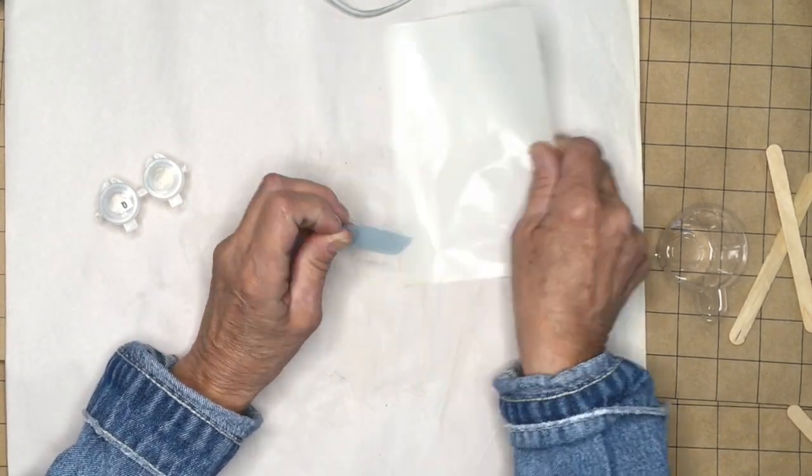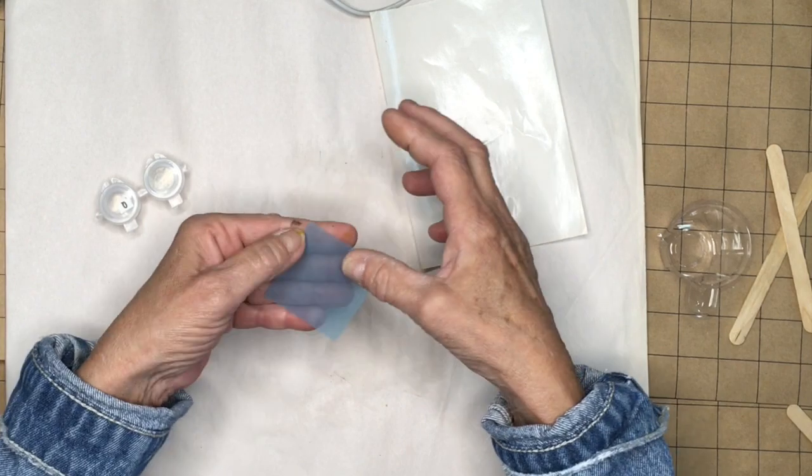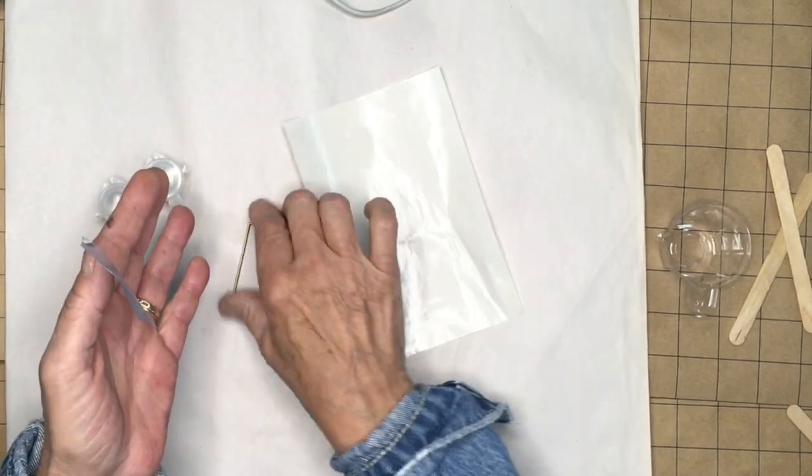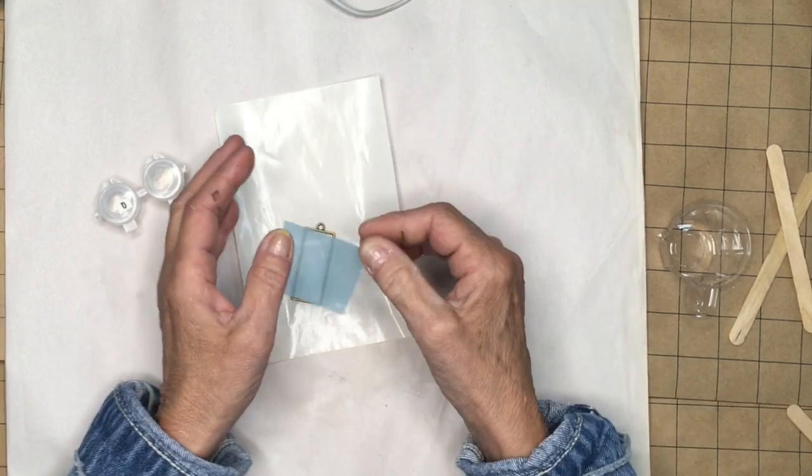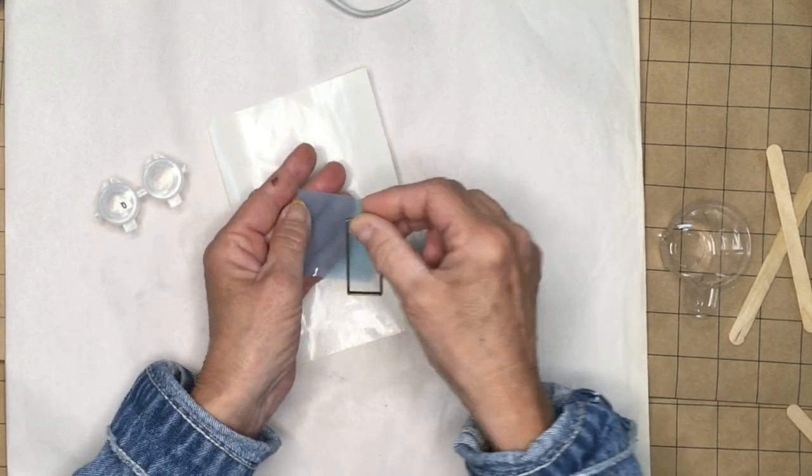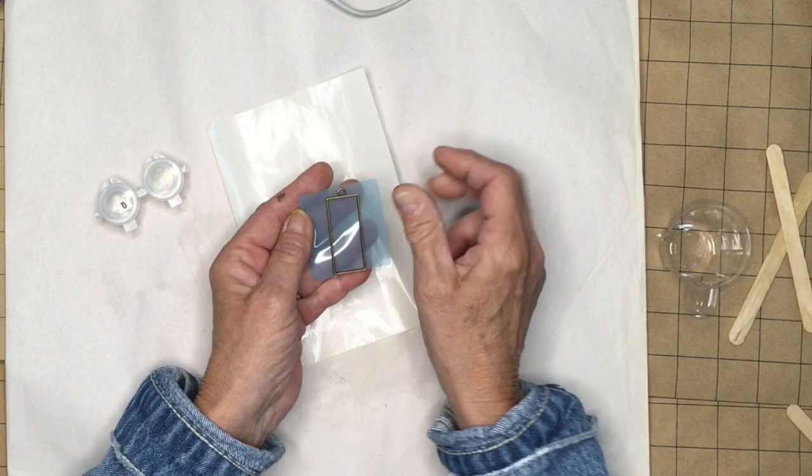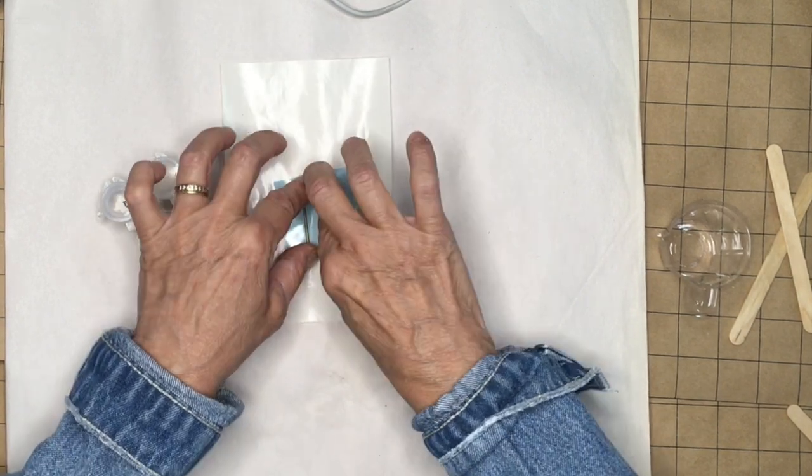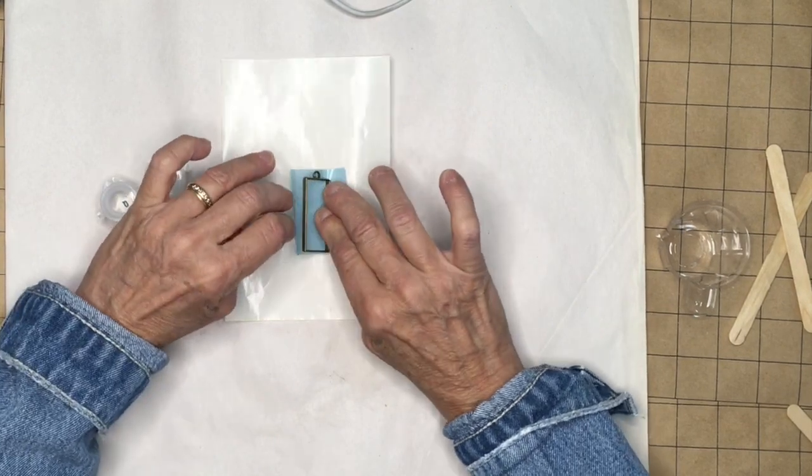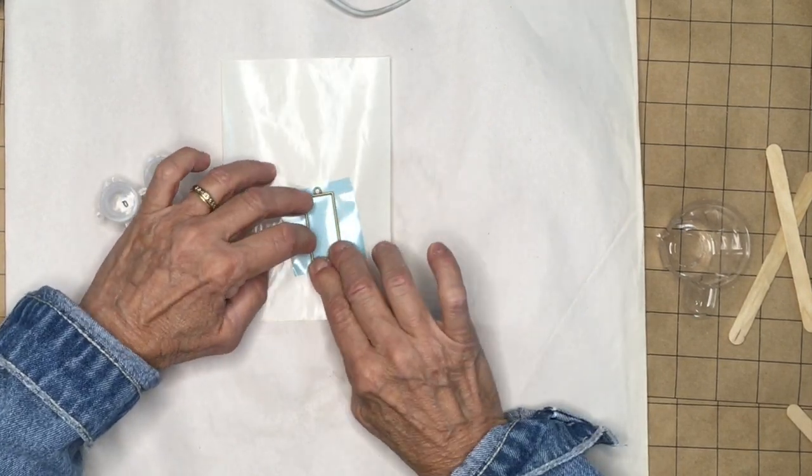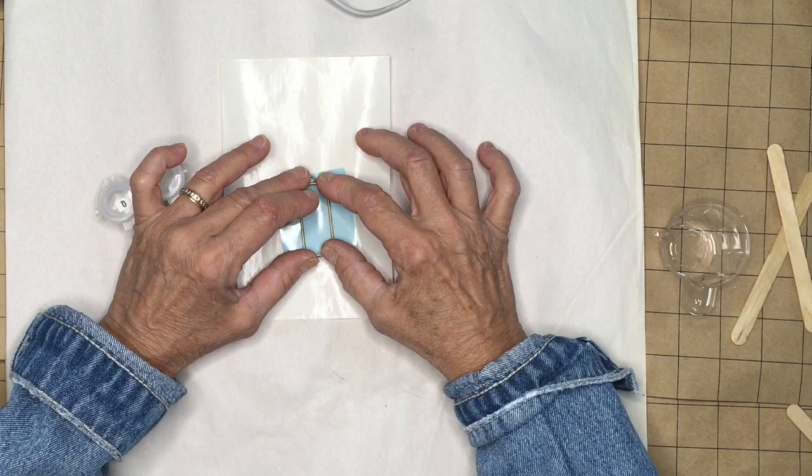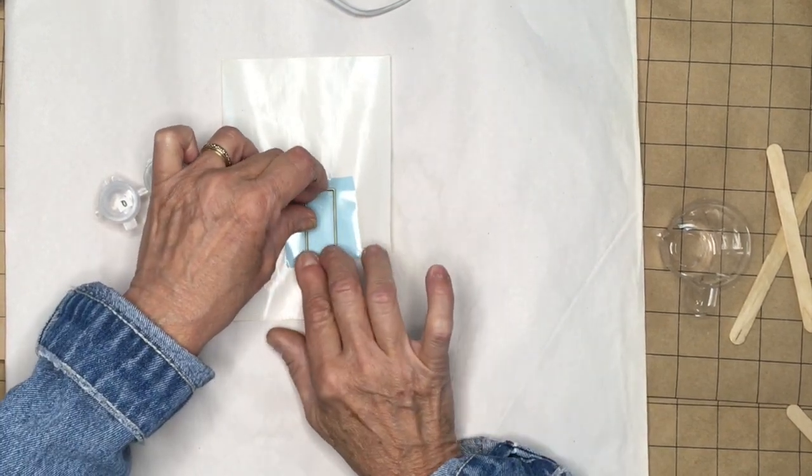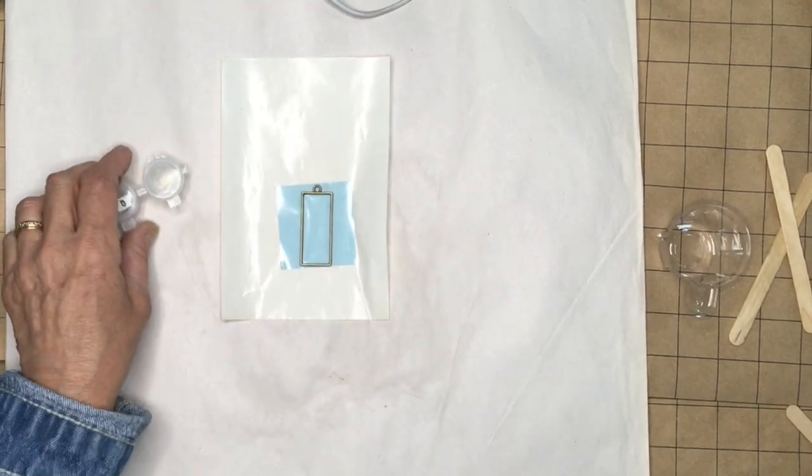I'm using this resin tape and I have it on this waxy paper. What you're going to do to seal the back of your resin piece is press that down nice and tightly so when you fill your piece it just doesn't fall out.